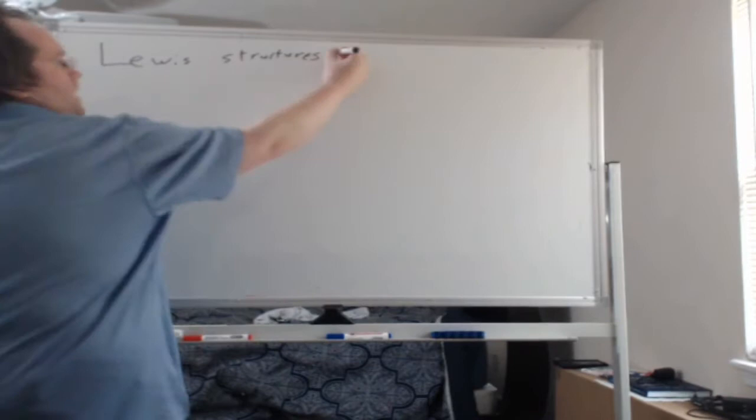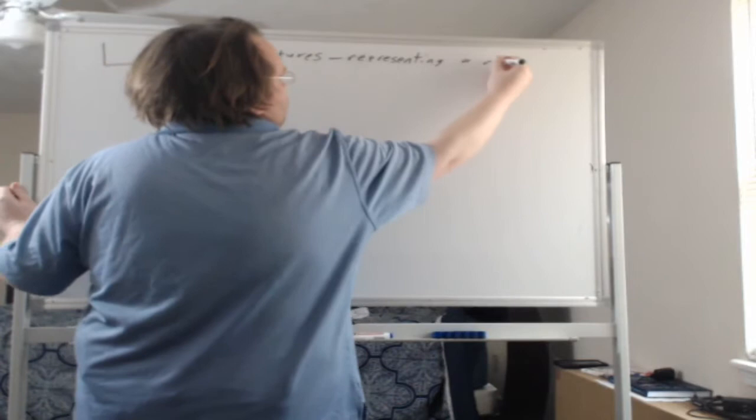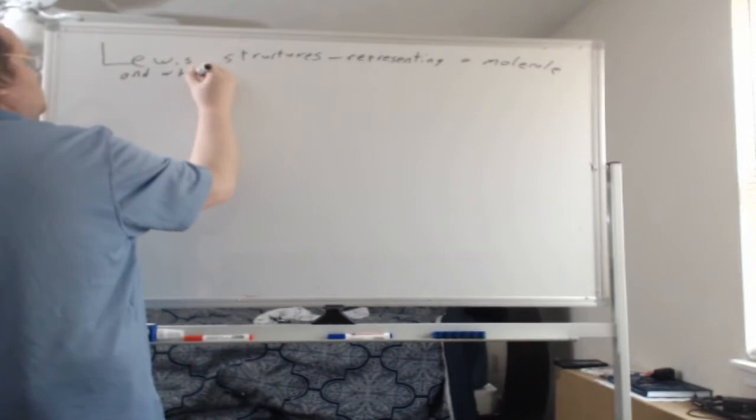So for this video we're going to look at the concept of Lewis structures. Specifically we're going to go over how to come up with a Lewis structure which is just a way of representing a molecule and where its electrons are.